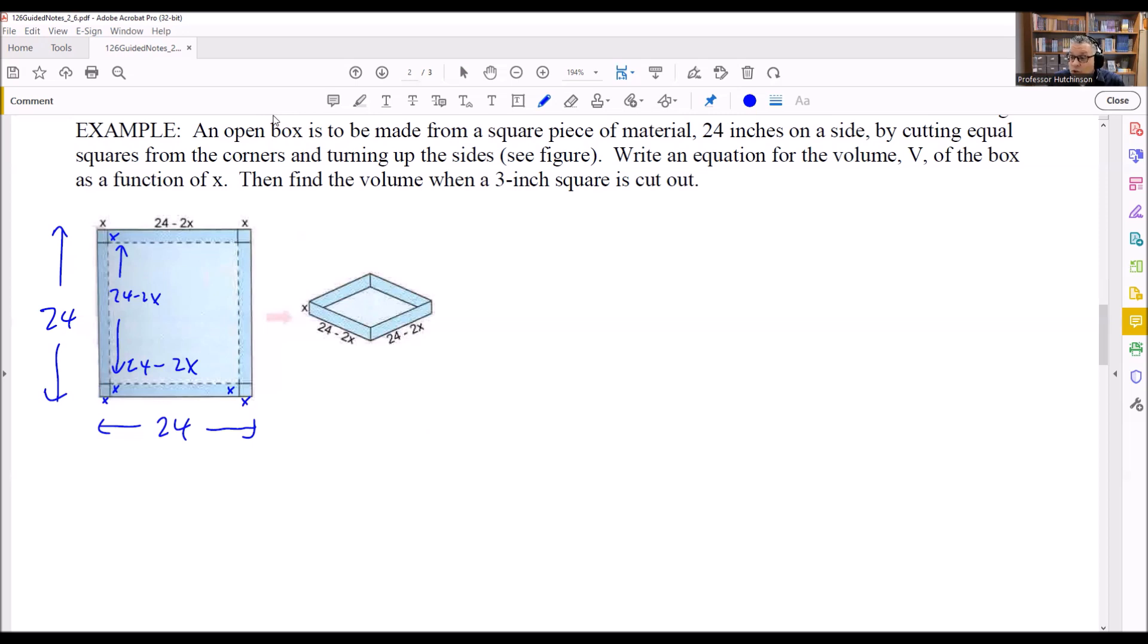And then each of these, we have 24 minus 2x and we have 24 minus 2x there because that's this side and that side because we're folding it along the dotted line. So if this gets folded up, that means all you're going to see there is just the bottom going along here. So in this case, I've got 24 minus 2x and 24 minus 2x there and I have the x is going up like that.